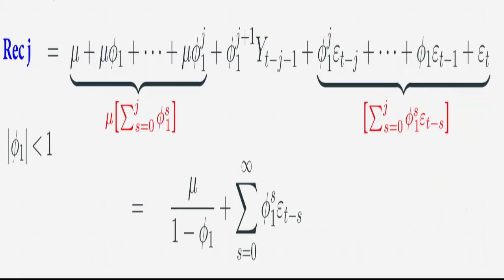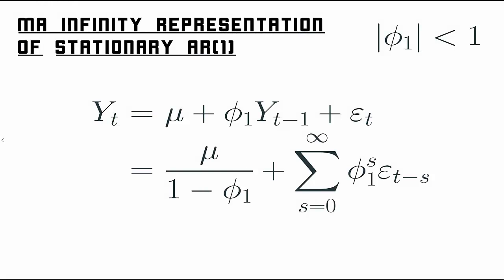So we've worked out the limit of all three terms and shown they equal the expression below. We've now re-expressed Yt, when |φ1| < 1, into its MA infinity form. This result is useful because we have general formulas for the mean, variance, and covariance function of an MA infinity, and once we have the AR1 in that form, we can plug in the particular MA infinity coefficients to obtain all the corresponding properties.